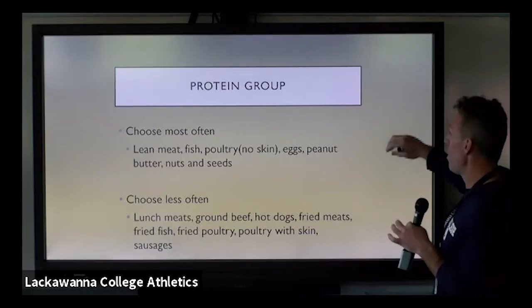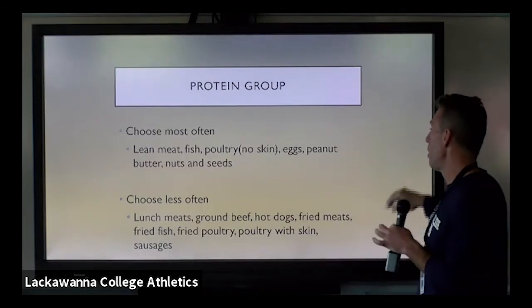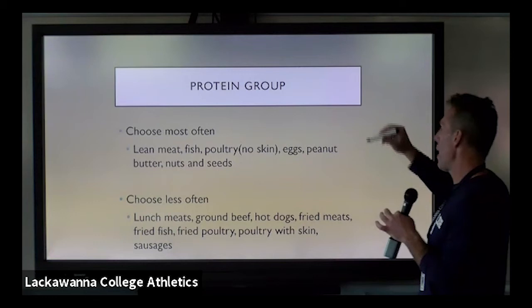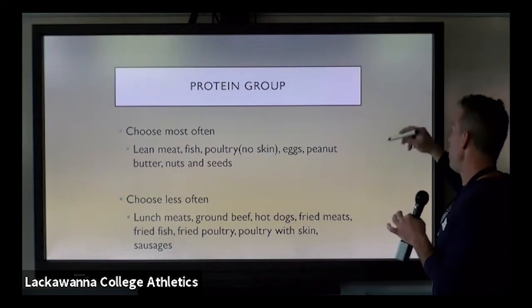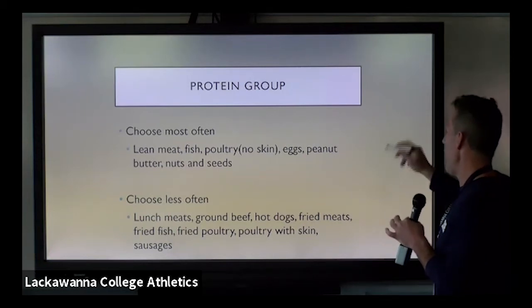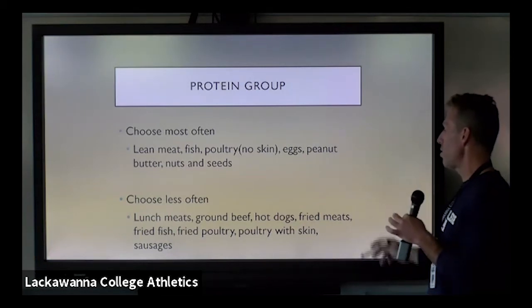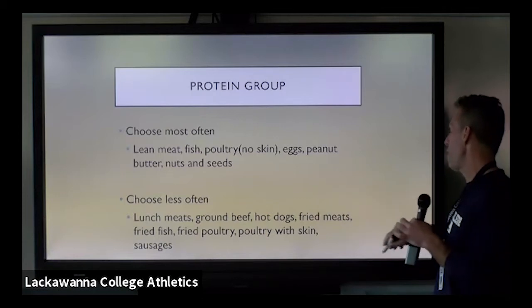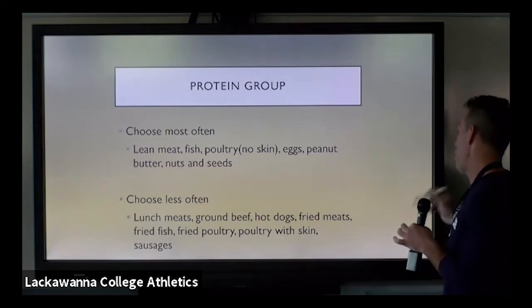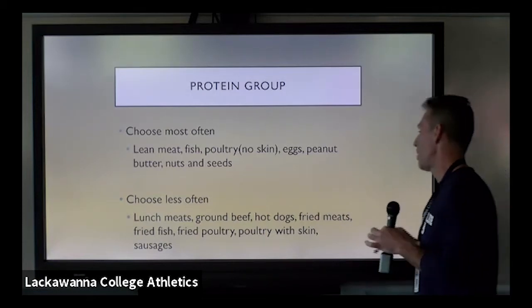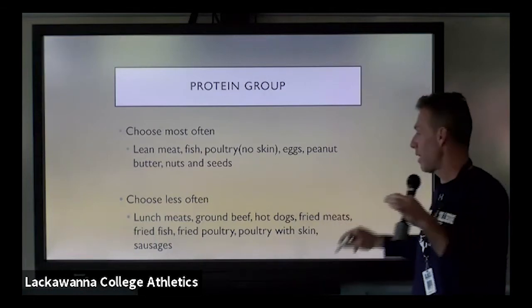In the protein group, we really want to concentrate on lean meats, fish, poultry, eggs, peanut butter, nuts, and seeds. Choose less often lunch meats, ground beef, hot dogs, fried meats, fried fish, fried poultry, poultry with skin, and sauces — essentially everything they probably serve in the CAF.